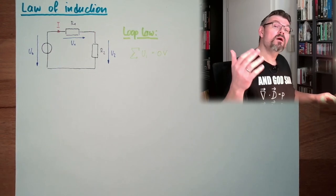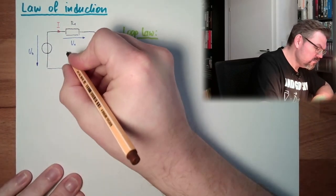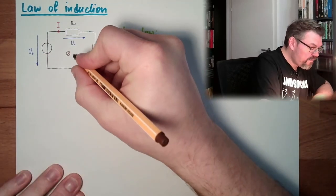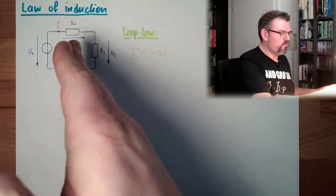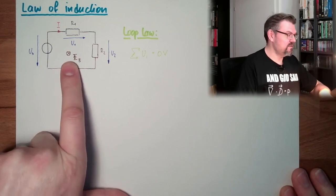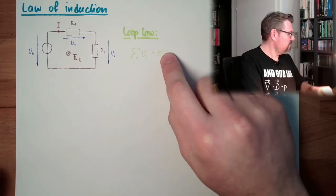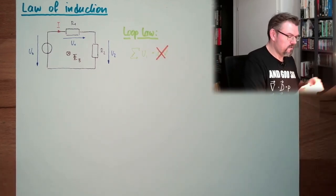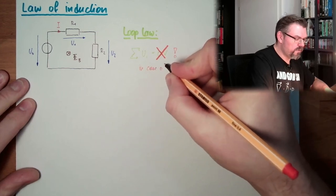And now we make our extension. We say here, this direction through the loop, we have a magnetic flux. It's a linked magnetic flux through a loop. This is already suspicious. If there is somewhere a magnetic field, then this is no longer valid.